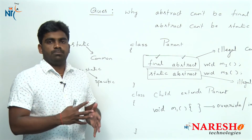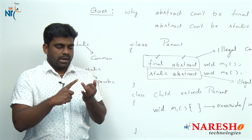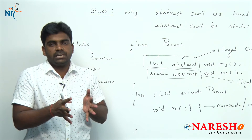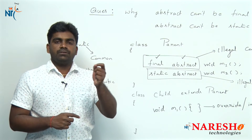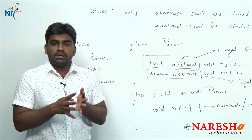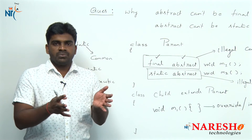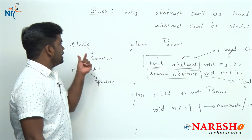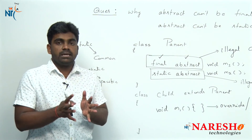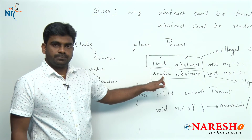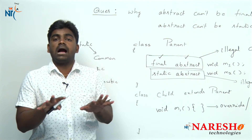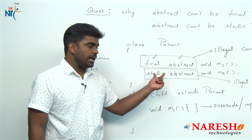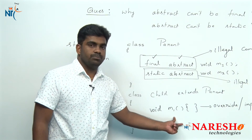For example, in a bank application, account number and balance are specific to a particular account holder — no one can share them. But consider the IFSC code — it is not particular to one account holder, it is common, and more than one account holder shares it. The parent class generally holds common functionality. If something is common, you declare it as static. If it is not common for all, you declare it as abstract and define it in the child class implementation.